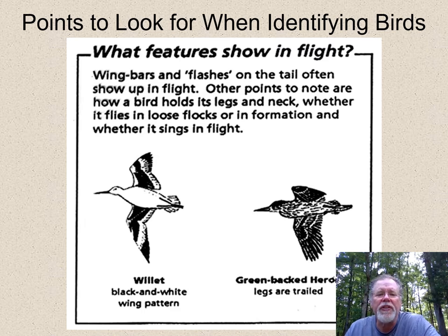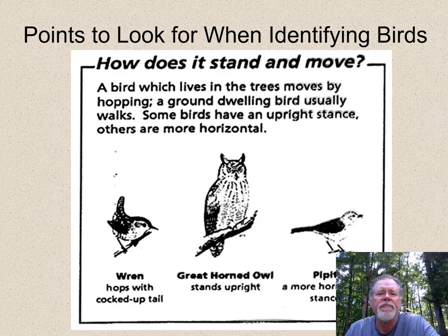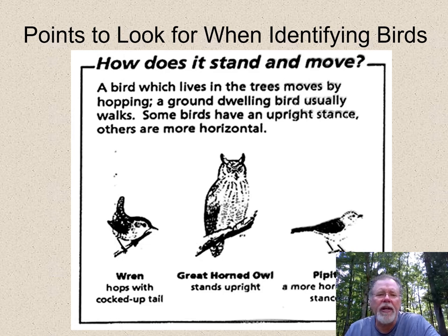As they fly, what kind of features do we notice? What kind of wing pattern do they have? Do they have a long tail? Do they trail their legs when they fly? What kind of things can you see when they fly? How does it stand and move? You have a picture on the left of a winter wren — all wrens, regardless of whether it's a winter wren, a Carolina wren, or a house wren, they all cock their tail up just like that winter wren is doing. Does it sit upright like that great horned owl?